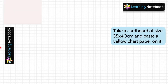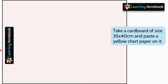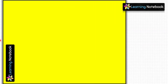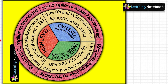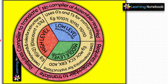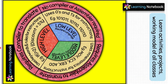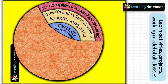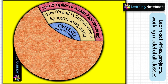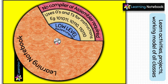Now that all preparations are done, let's assemble the working model. Take a cardboard of size 35 by 40 centimeters and paste a yellow chart paper on it. Place the pink circle, then the yellow circle on top, then the smallest white circle, matching all their centers. Finally, place the orange circle on top of all these circles and again match the centers. Screw a nut and bolt through all the circles and into the cardboard.